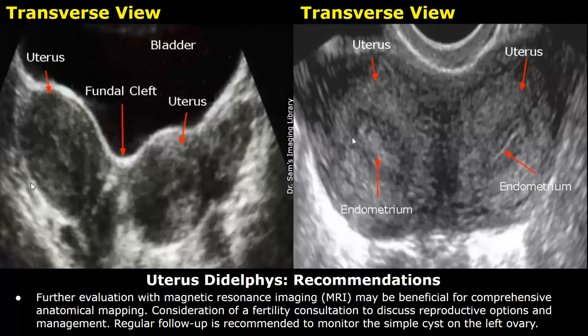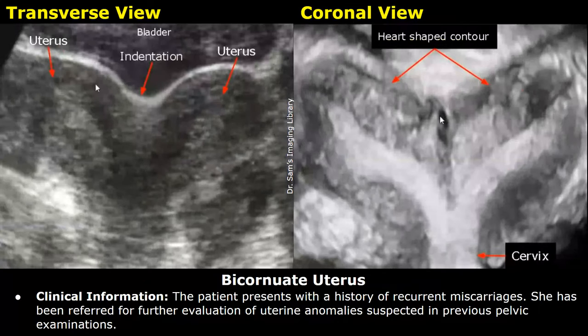Now we have a case of bicornuate uterus. Clinical information: the patient presents with a history of recurrent miscarriages and has been referred for further evaluation of uterine anomalies suspected in previous pelvic examinations.